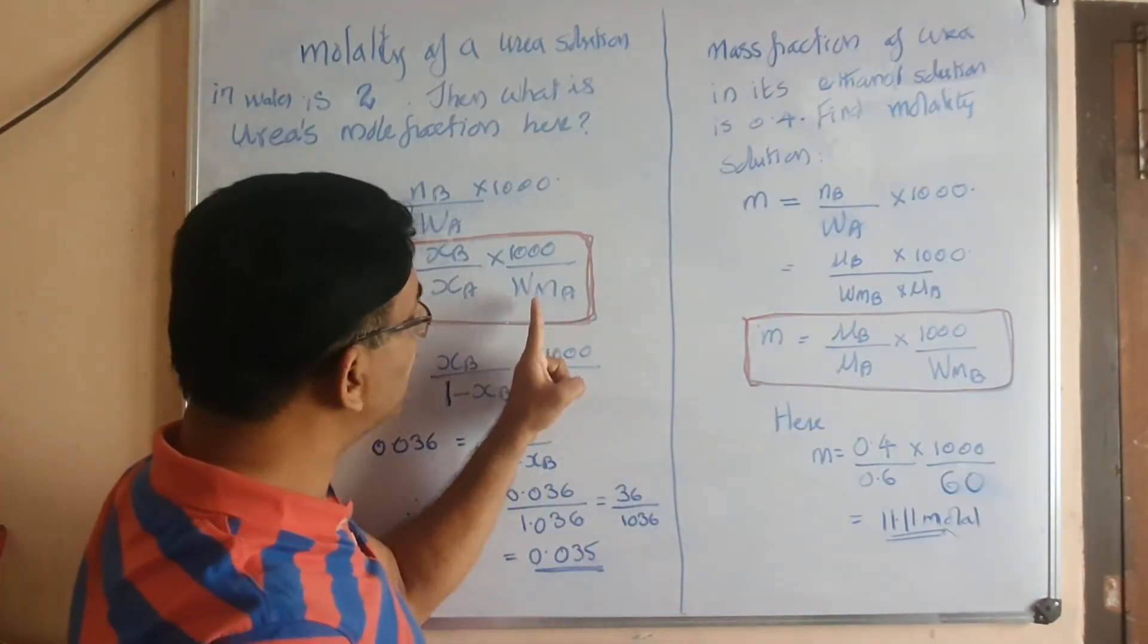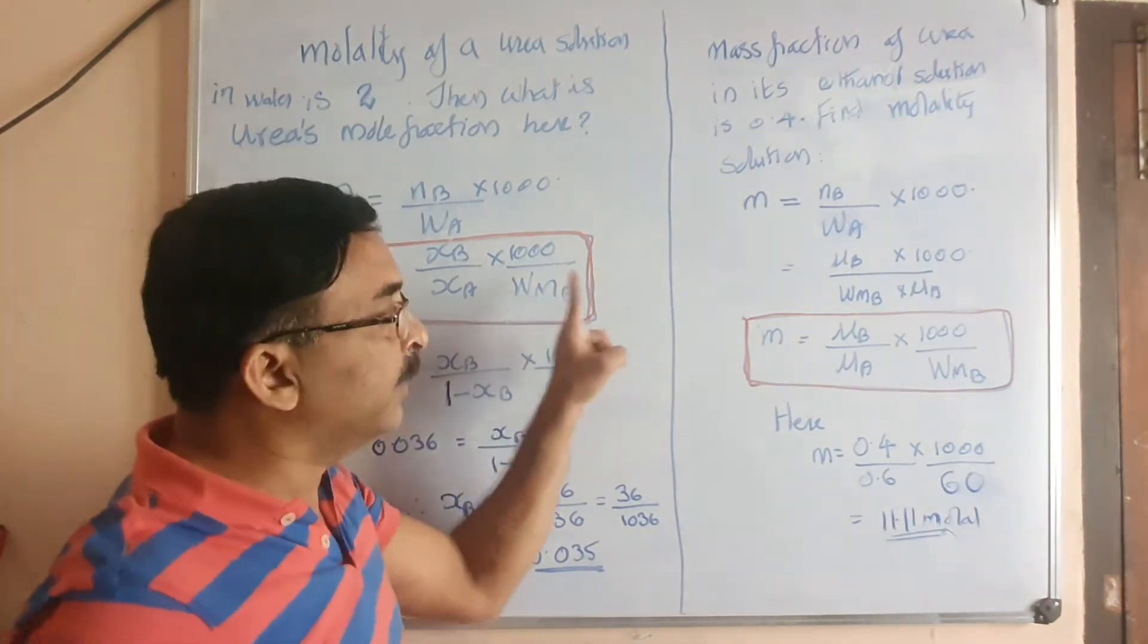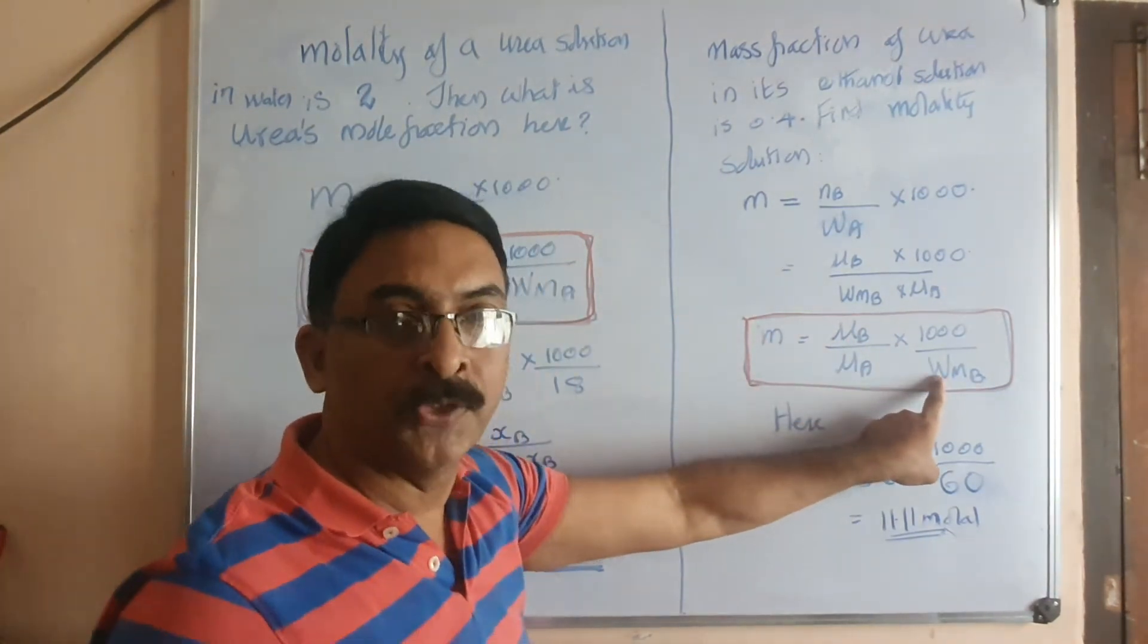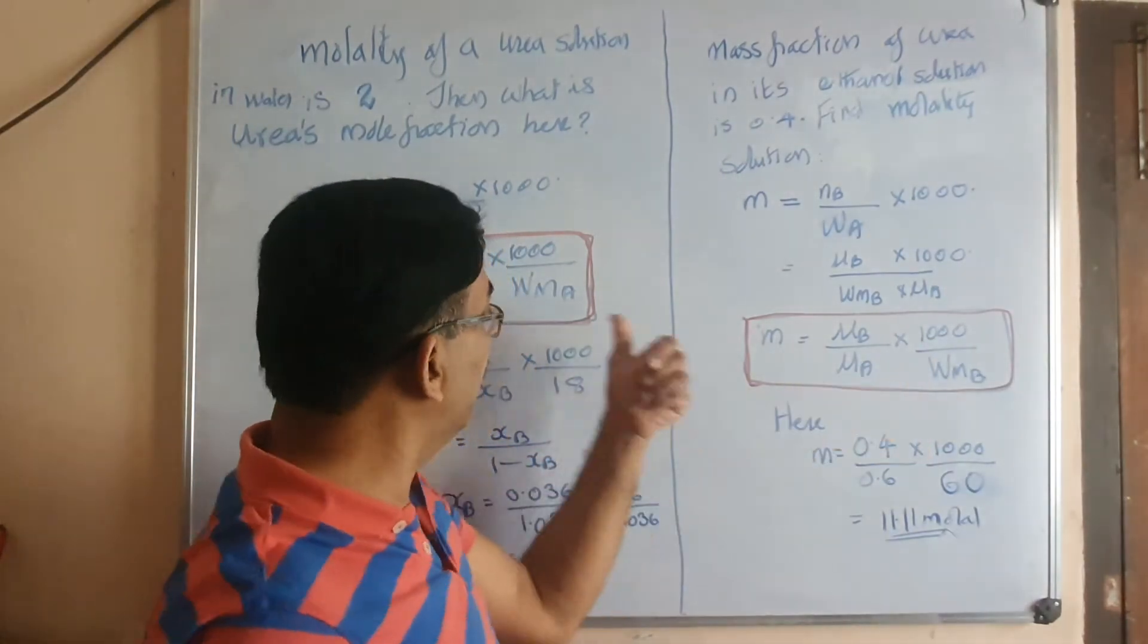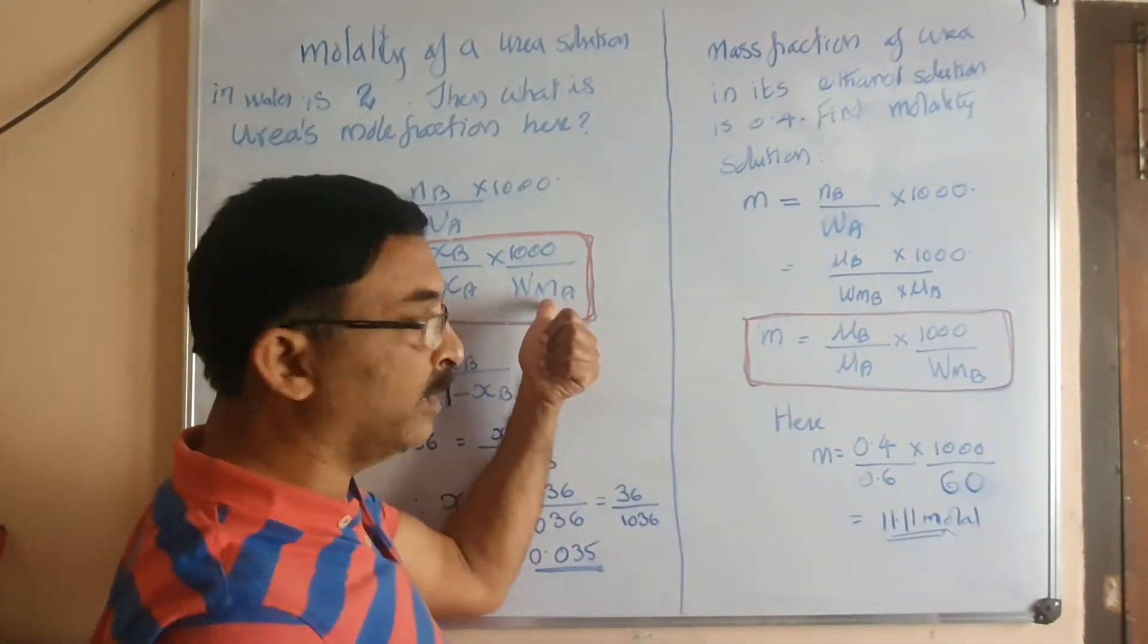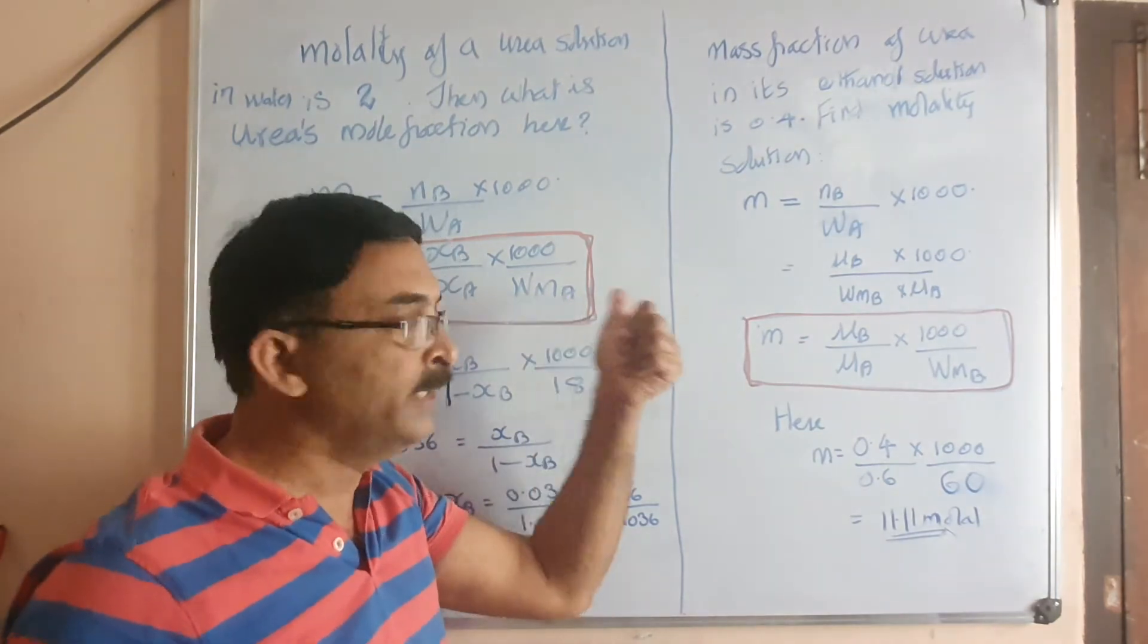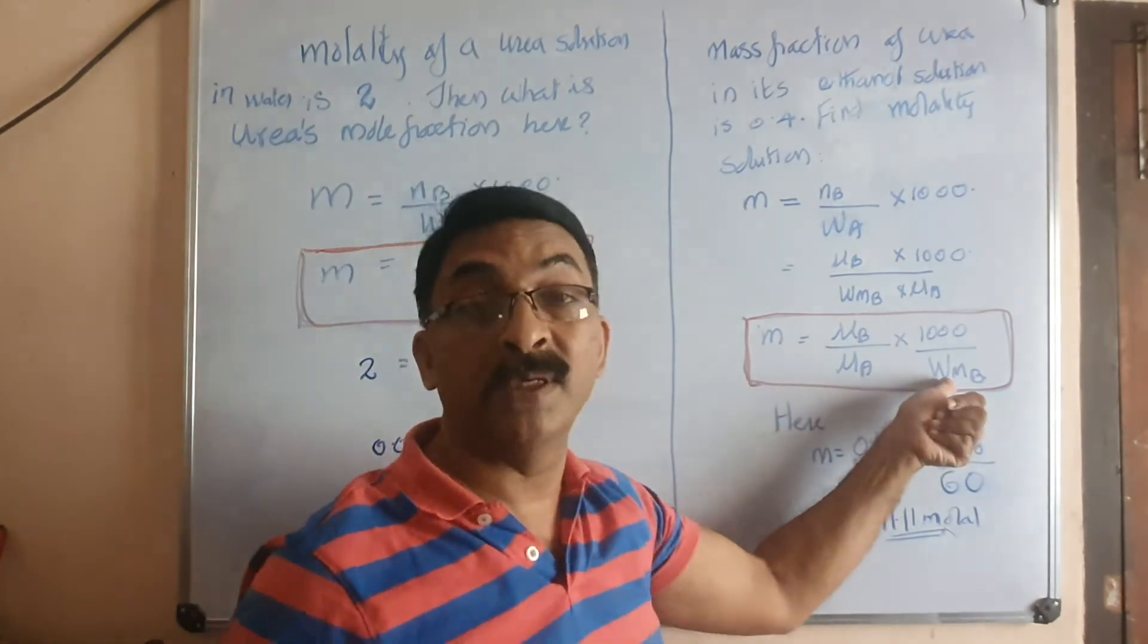The main difference: here it is the molecular mass of the solvent, whereas here it is the molecular mass of the solute. So while you memorize, keep this in mind that in this equation it is molecular mass of solvent, whereas in this equation it is the molecular mass of the solute.